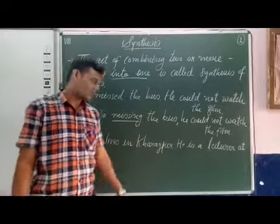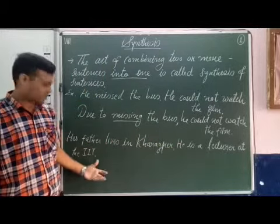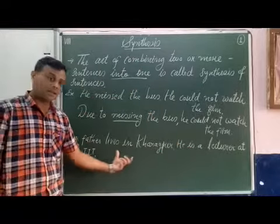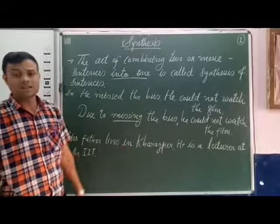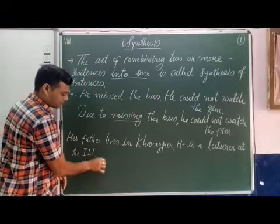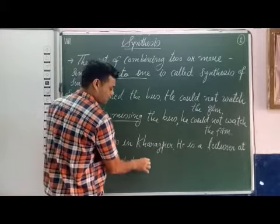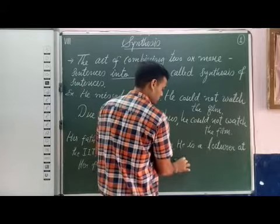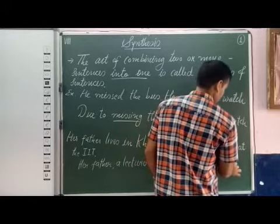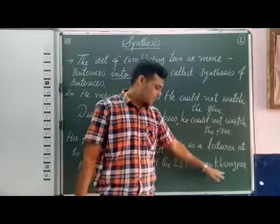See the next example. Two sentences are given: 'Her father lives in Kharagpur.' and 'He is a lecturer at the IIT — Institute of Information Technology.' Here also there are two sentences, and we have to combine them without using a conjunction. The combined sentence is: 'Her father, a lecturer at the IIT, lives in Kharagpur.'